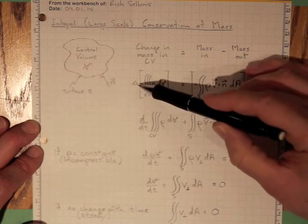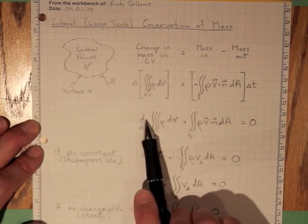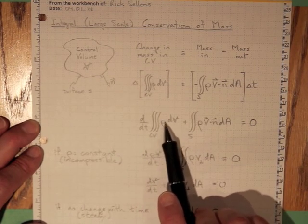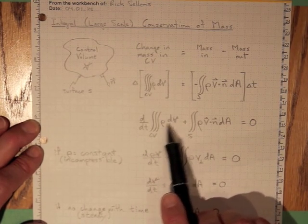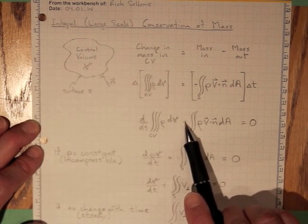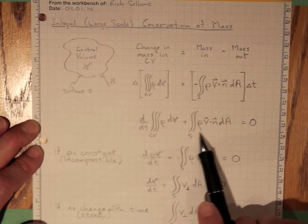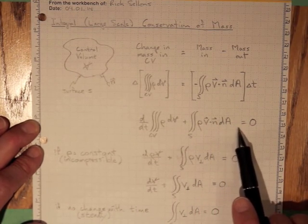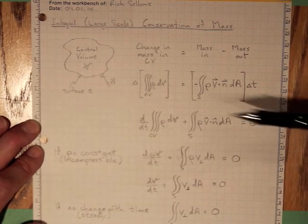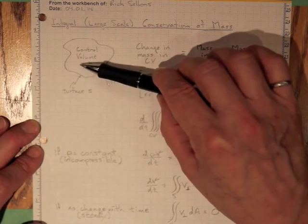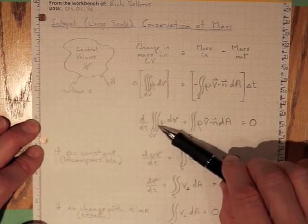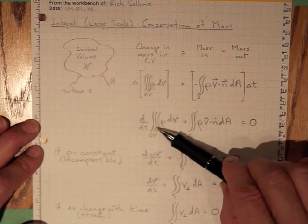Or if we take delta t to the other side, we wind up with d by dt of the integral over the entire volume of rho dV, rate of change of the mass in the control volume with time, plus the sum of all the mass that went in and all the mass that went out must be equal to zero.